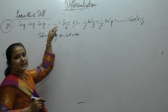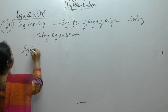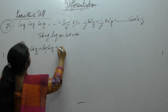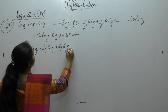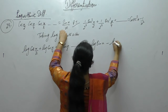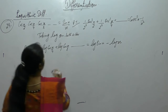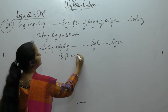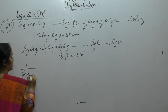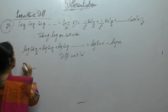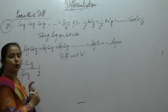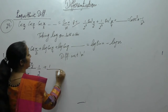Log of a·b·c = log a + log b + log c, and so on. Log of a/b = log a - log b. So taking log: log cos(x/2) + log cos(x/4) + log cos(x/8) + ... = log sin(x) - log x. Now differentiate with respect to x.